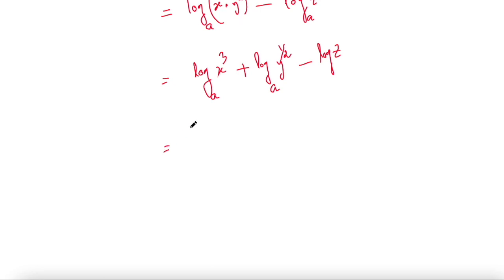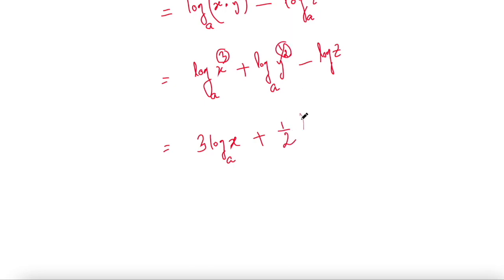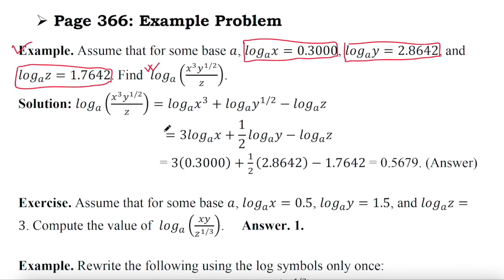Now using the power rule, you can bring the exponents down as coefficients. So we can write: 3 log x to the base a, plus one-half log y to the base a, minus log z. Now directly put in the given values: for log x put 0.3, for log y put 2.8642, and for log z put the given value, and calculate the result using your calculator. This gives the answer of this logarithmic expression.